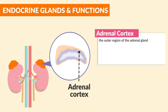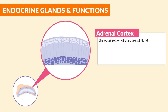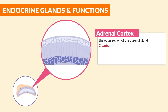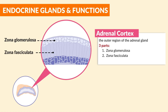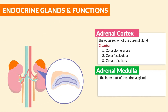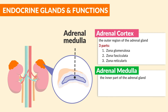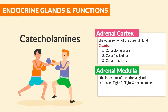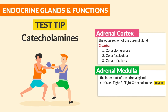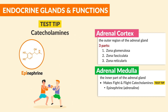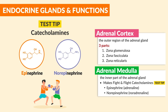Moving on to the adrenal cortex — the outer region of the adrenal gland, divided into three zones: zona glomerulosa, zona fasciculata, and zona reticularis. The adrenal medulla is the inner part of the adrenal gland, and it makes the fight-or-flight catecholamines — a huge test tip. Epinephrine, called adrenaline, and norepinephrine, called noradrenaline.